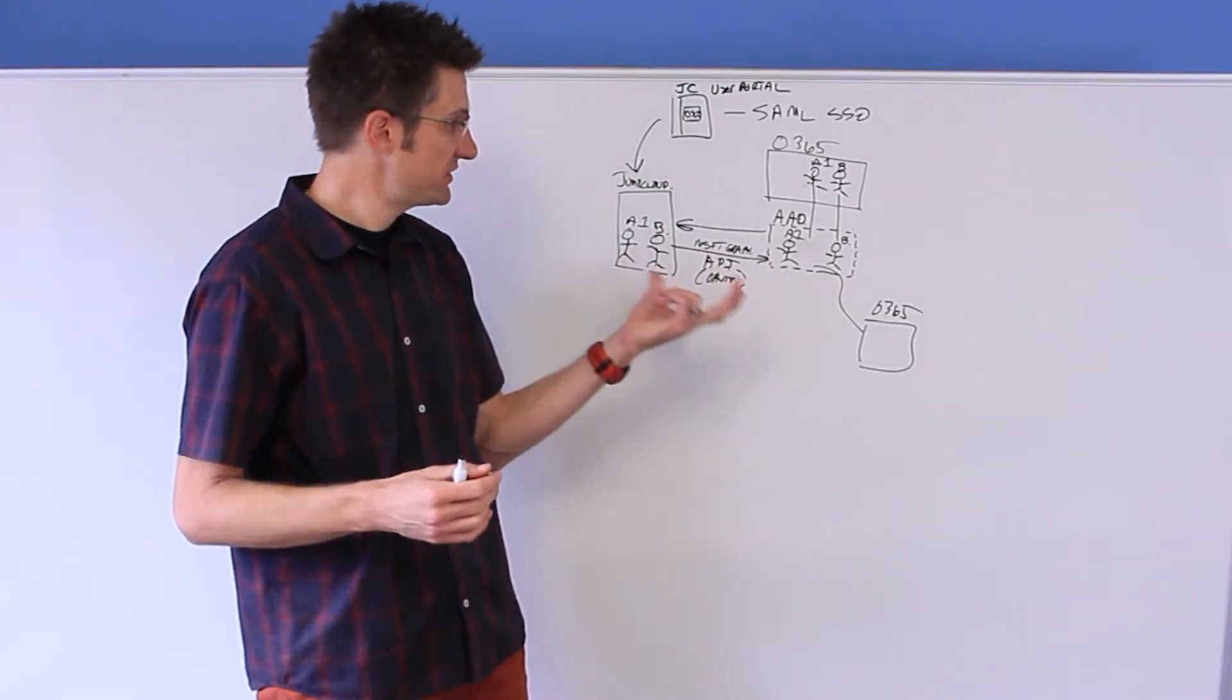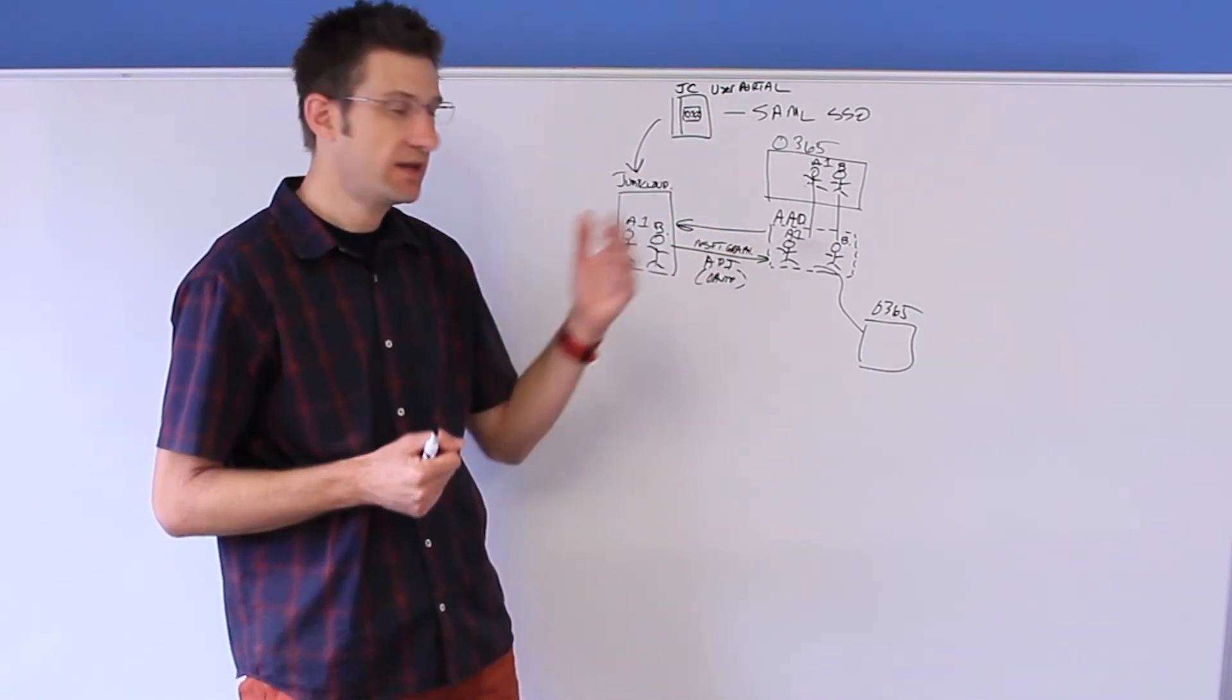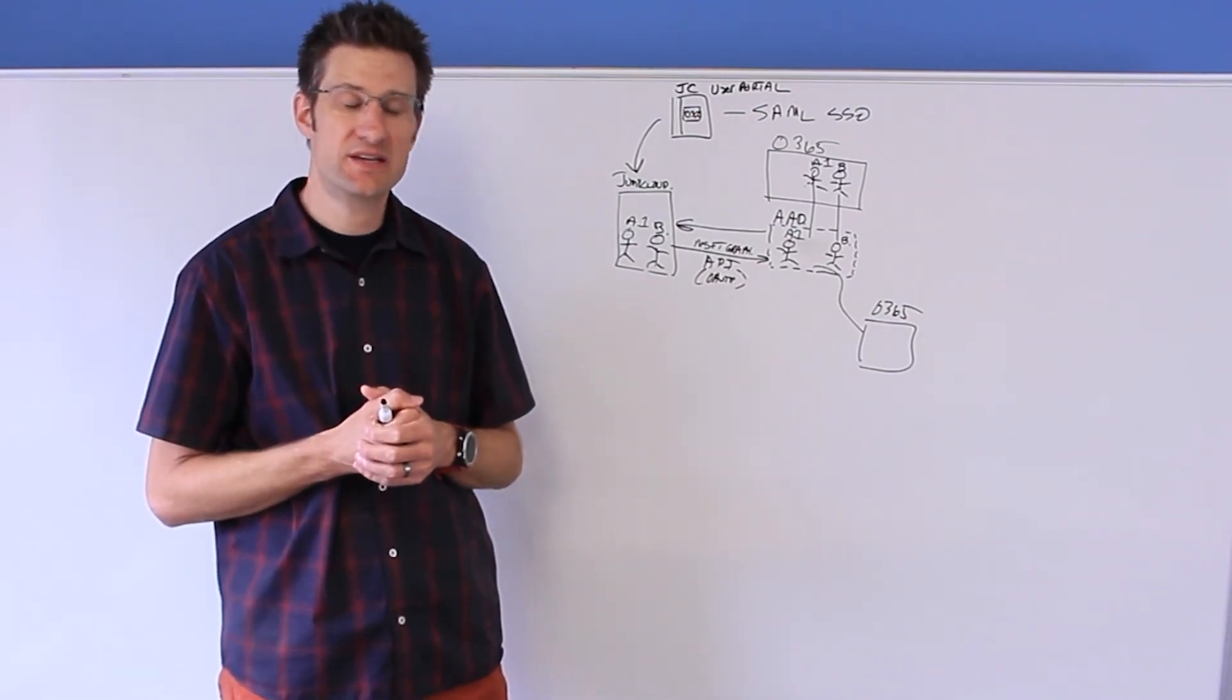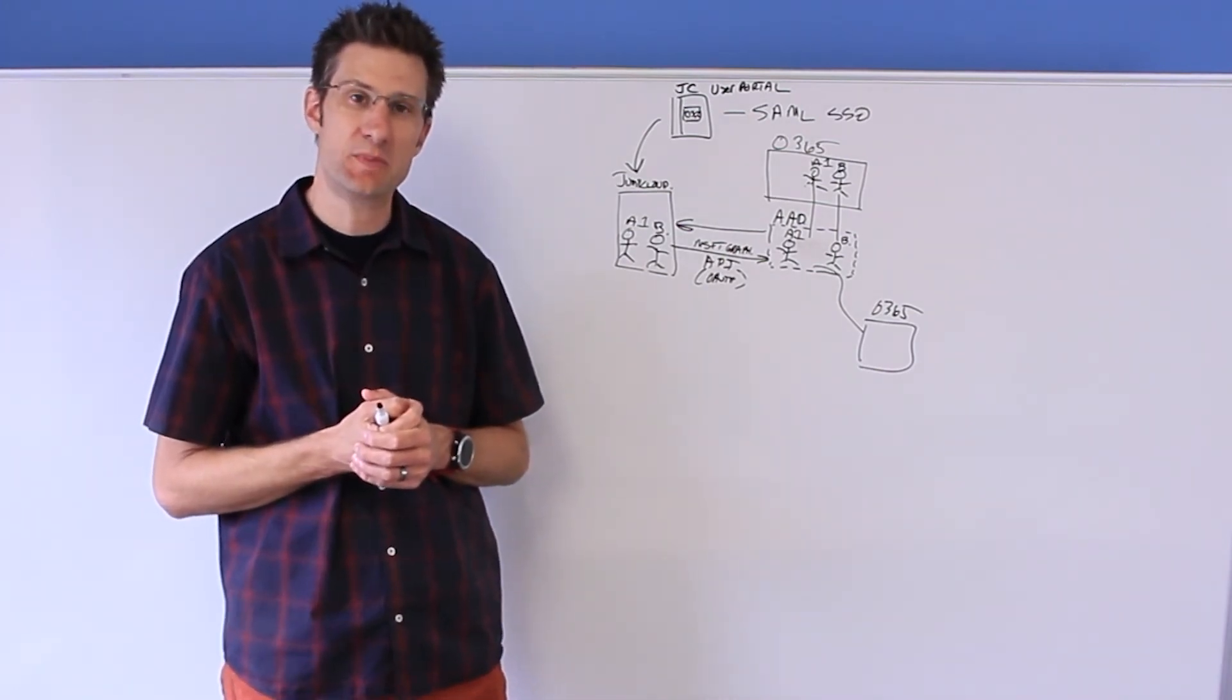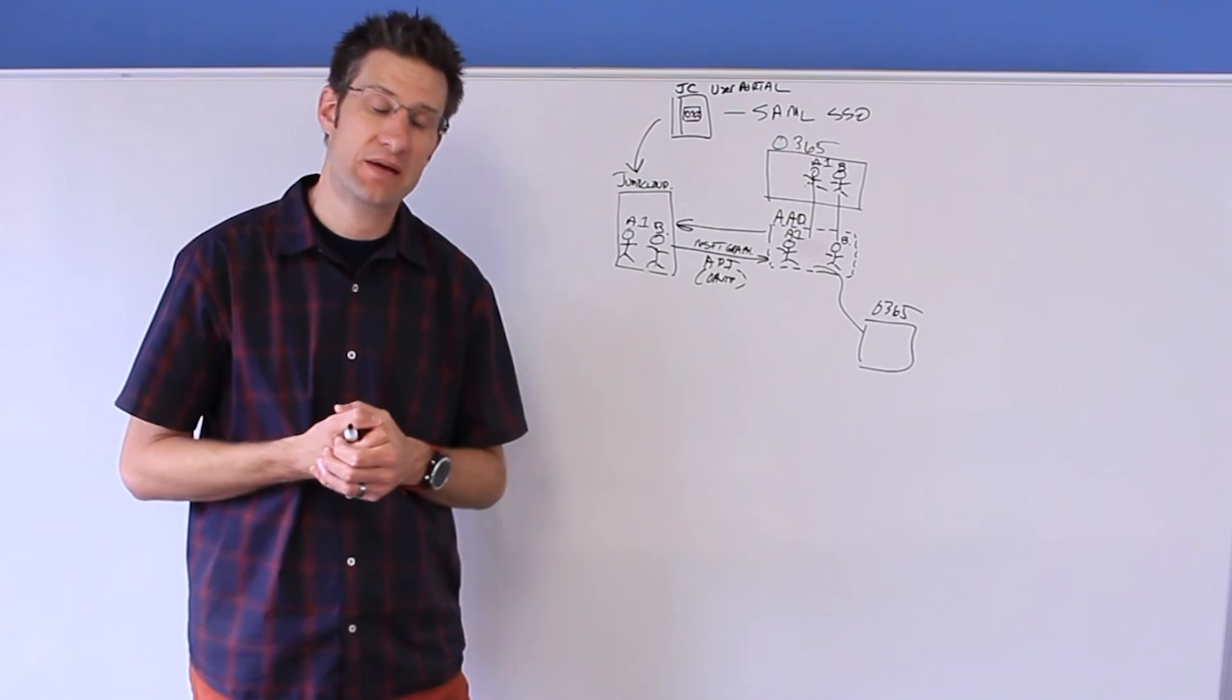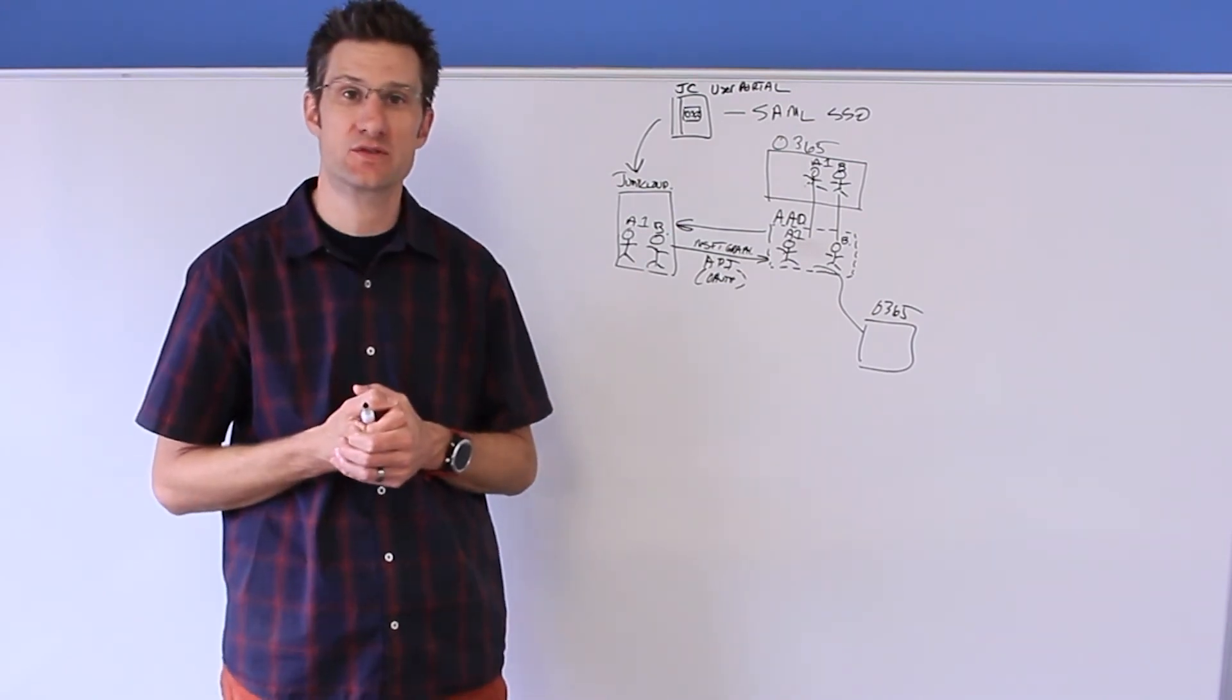So that's it. This is the core of what we do with our two particular integration points with Office 365, SAML and our API-driven integration bridge. We'd love to have you take a look at this, evaluate it. Please head to support.jumpcloud.com for a deep dive on our knowledge base and all the instructions of how this works. But again, all of this is available for you to try for free by visiting jumpcloud.com. Hope this is helpful for your understanding, and we look forward to having you back for more whiteboard videos. Thanks.